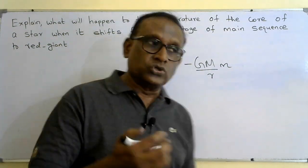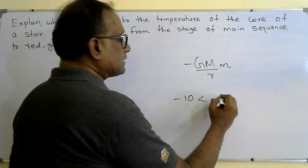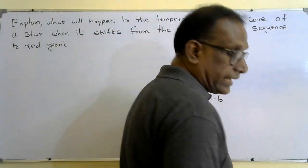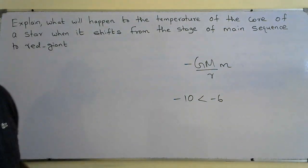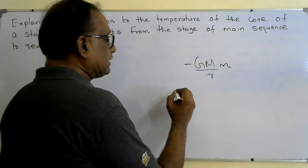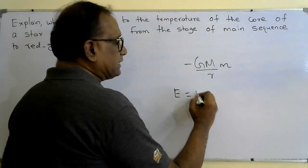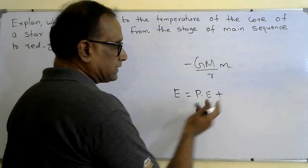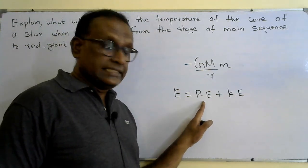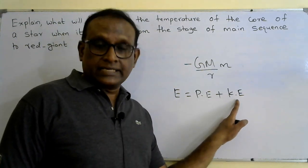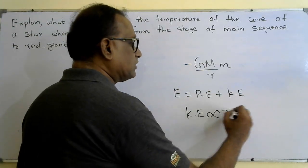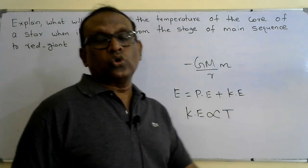The gravitational potential energy decreasing means: minus 10 is lower than minus 6, for example. But since there is no fusion, the internal energy should remain the same. Internal energy equals potential energy plus kinetic energy of the gas particles in the core. So when potential energy decreases, kinetic energy must increase. When kinetic energy increases, and since kinetic energy is directly proportional to temperature, the temperature of the core will increase.